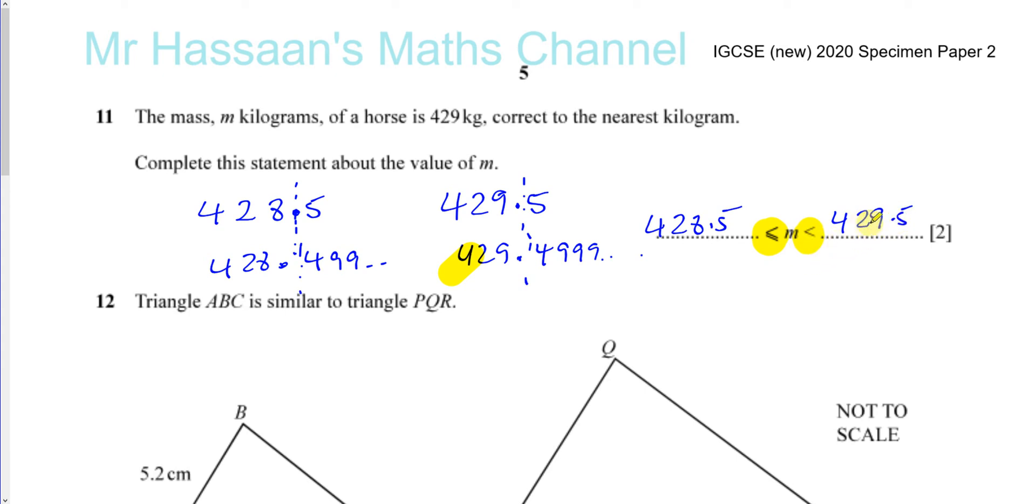So that's like the limit it just can't reach. Everything just below that is going to be. So 429.5 is how you should write your answer.